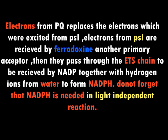From ferredoxin, the electrons are passed through the electron transport system of cytochromes to be added to NADP. As the electrons are being added to NADP, they are moving from a higher energy level to a lower energy level, and that energy is used to form NADPH. From ferredoxin, the electrons carry some energy, and the hydrogen ions released from the breakdown of water at Photosystem 2 rejoin and are added to NADP. When we bring electrons and hydrogen ions together, we form reduced NADP — NADPH.